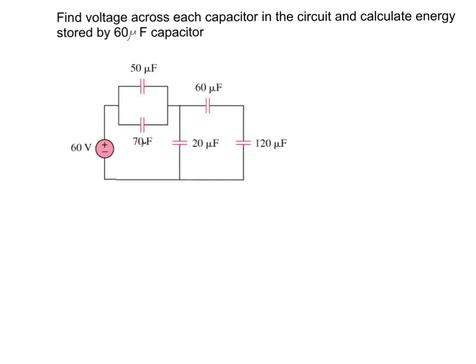Before we start, let's talk about the main ideas we'll be using. Looking at the circuit, we can see that capacitors are connected differently — some capacitors are connected in series and some capacitors are connected in parallel. To find the equivalent capacitance, we need to remember the equations for capacitors in series and in parallel.